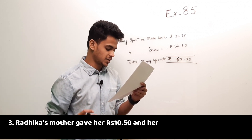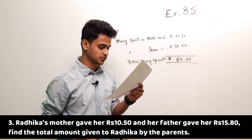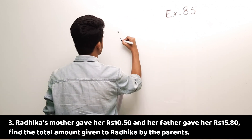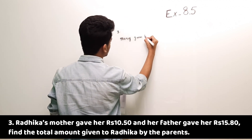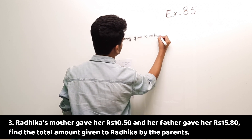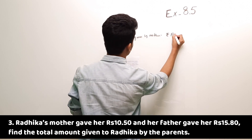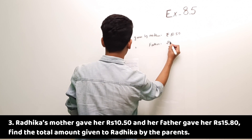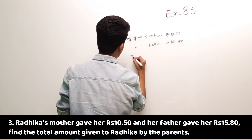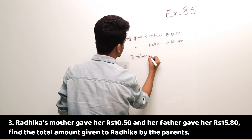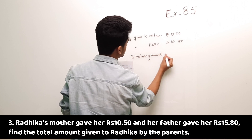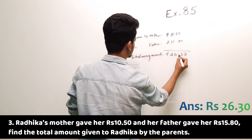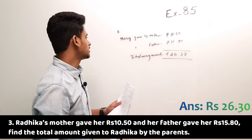Question 3: Radhika's mother gave her rupees 10.50 and her father gave her rupees 15.80. Find the total amount given to Radhika by her parents. Money given by mother is rupees 10.50 and by father is rupees 15.80. Total money received by Radhika from her parents is rupees 26.30.